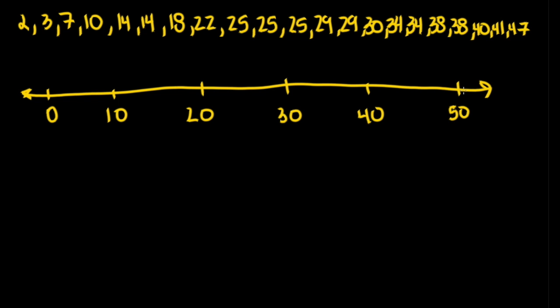The first thing we need to do is find where our lowest number is — this is where our first dot goes. Our lowest number is 2, so our first dot goes approximately here. Next we find our highest number, which is 47, so our next dot goes approximately here. For our middle dot we find the median. There are 21 numbers given to us, so the median is the 11th number from either end. Counting 11 numbers in, our median is 25, so we put our next dot here at 25.